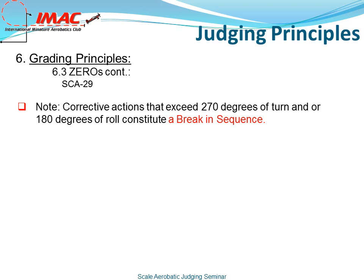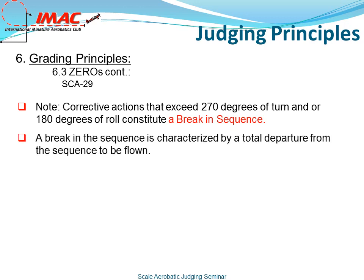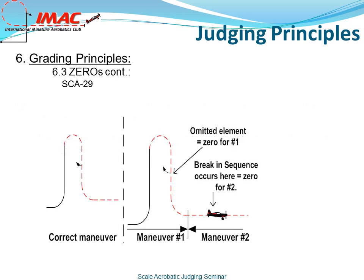Corrective actions that exceed 270 degrees of turn and/or 180 degrees of roll constitute a break in sequence. A break in sequence is characterized by the total departure from the sequence to be flown. In this example, the pilot omitted the half roll and exited the maneuver incorrectly. In maneuver number two, the pilot became disoriented and performed more than the 270-degree turn and more than a 180-degree roll, flying around to regain bearings before flying the next maneuver. In this case, maneuver number one receives a zero for omitting the half roll, a break penalty is assessed, and maneuver number two is also zeroed because a break in sequence was performed.